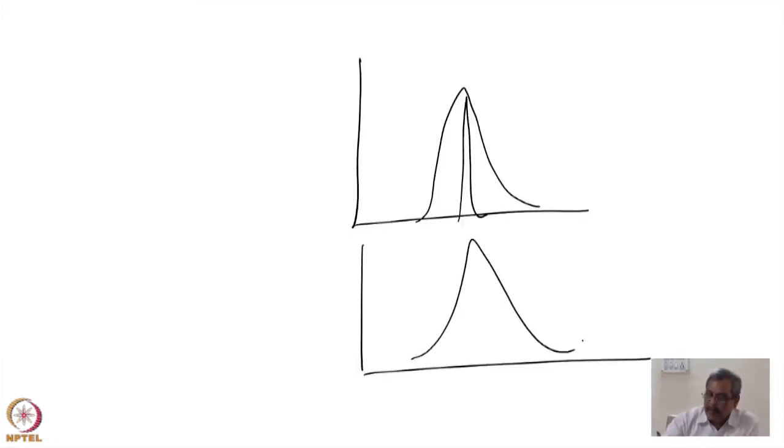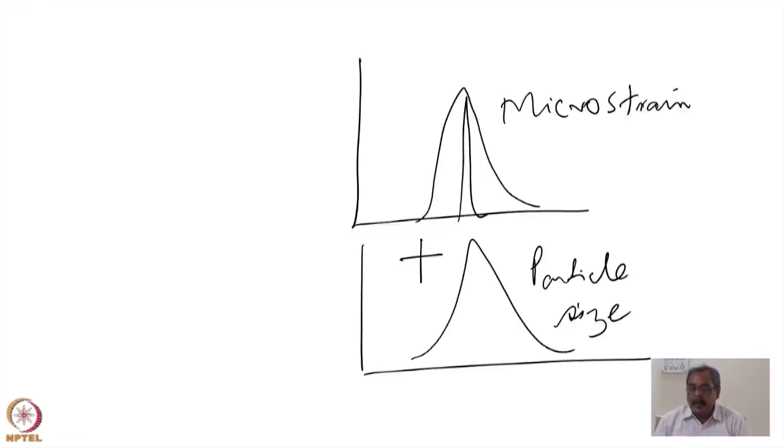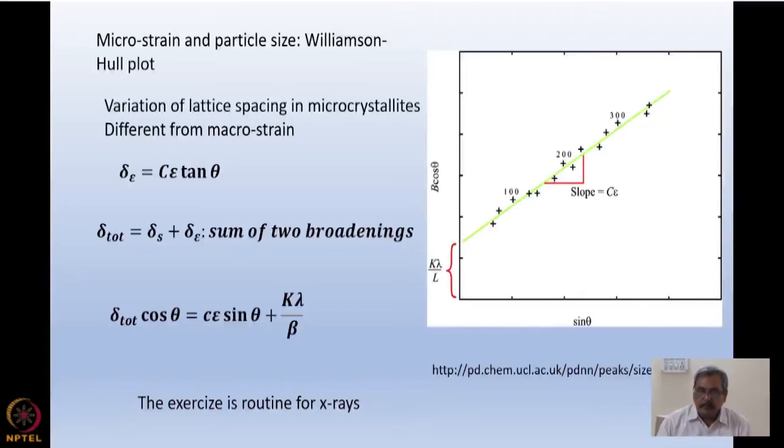So now the broadening of the peak, one is due to particle size and one is due to microstrain. I call it microstrain because this is different from what I did in the previous part of my talk. These two cause a broadening of the peak, and from these two we can find out the value of the particle size and also the strain.